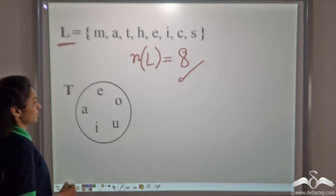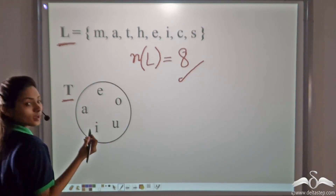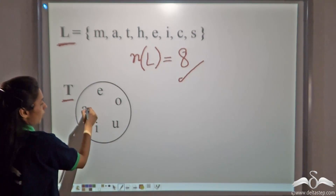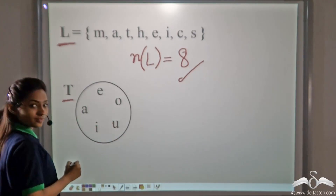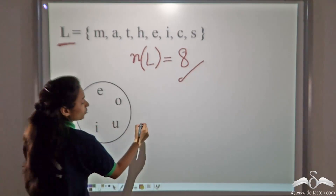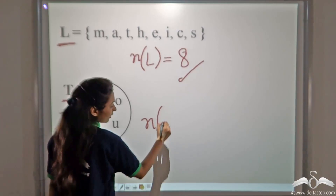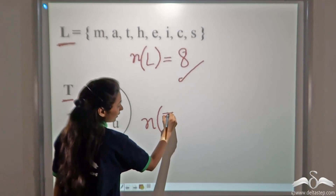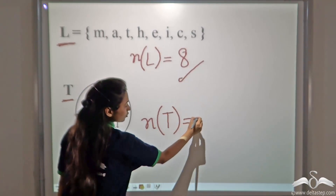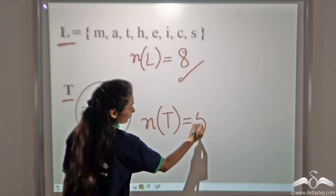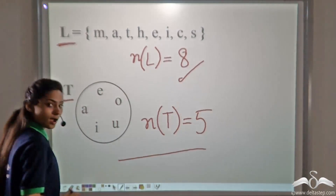Now, what about this? This is set T. Count the number of elements: 1, 2, 3, 4, 5. So we write small n, then in brackets write the name of the set, that is n(T) = 5. This is our answer.